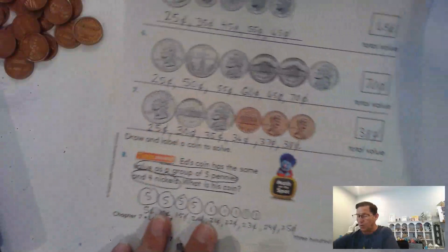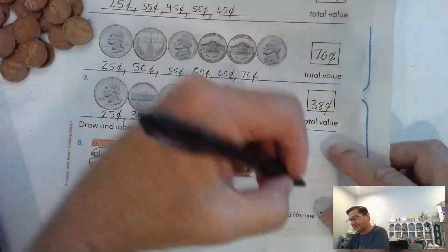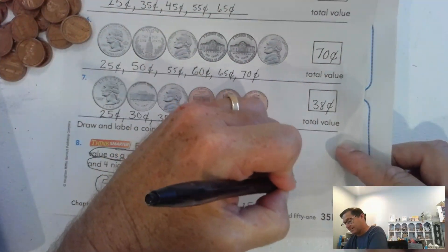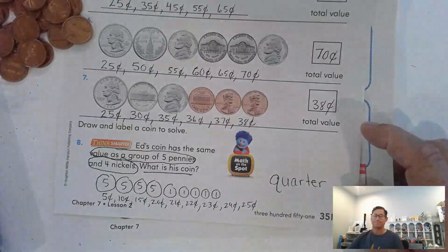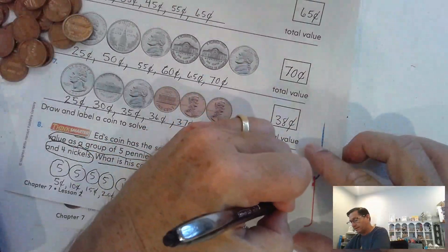What is his coin? What coin has a value of 25 cents? A quarter. A quarter equals 25 cents.